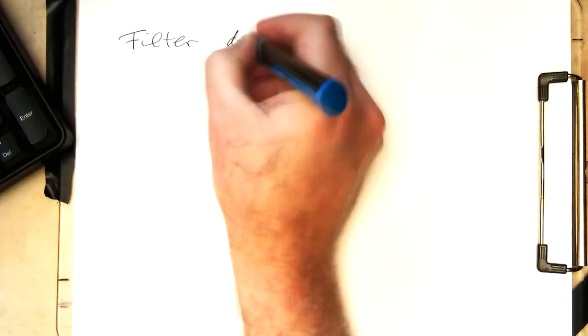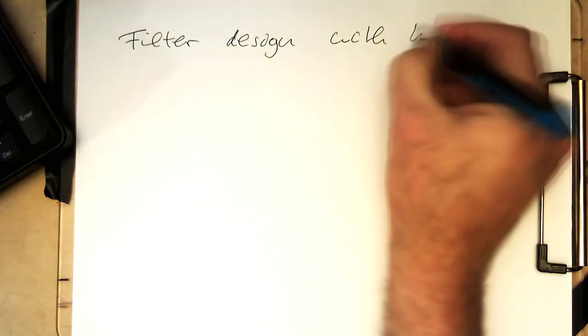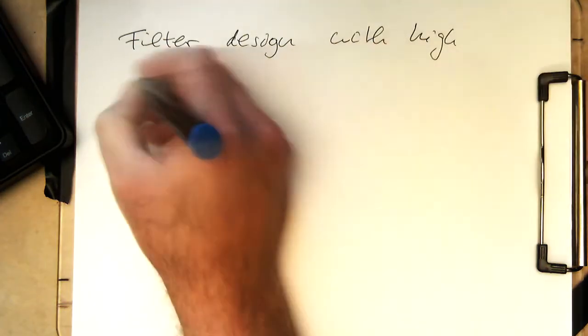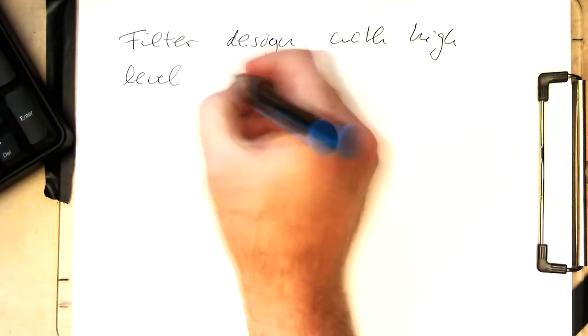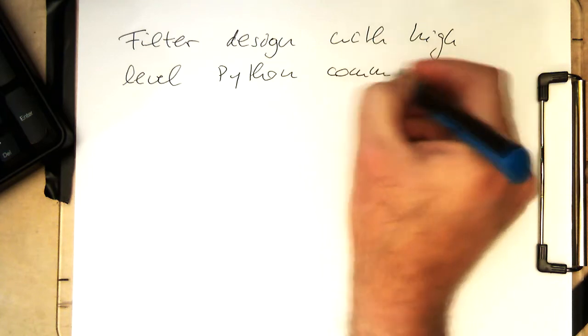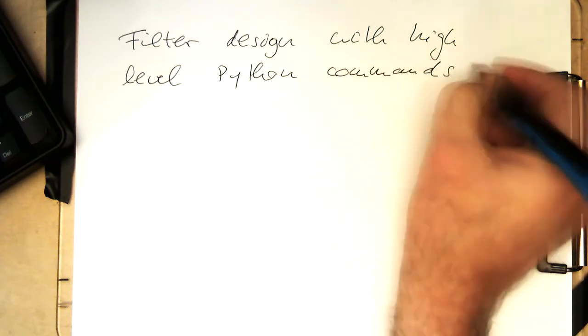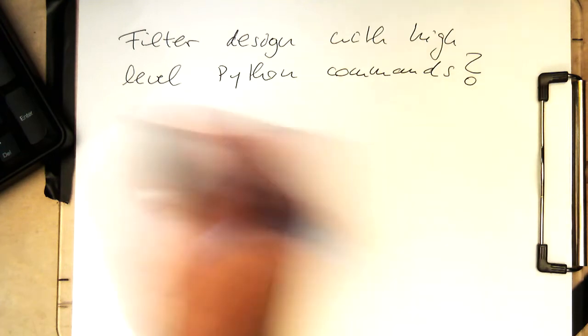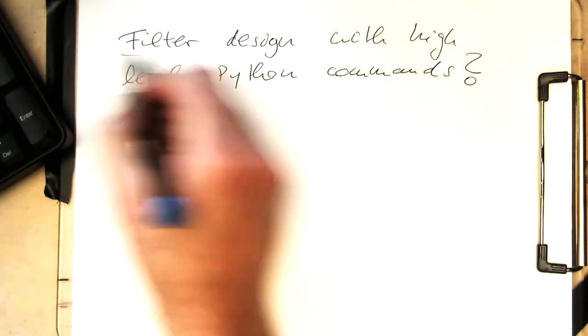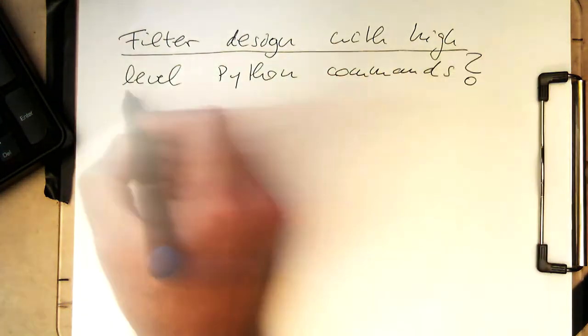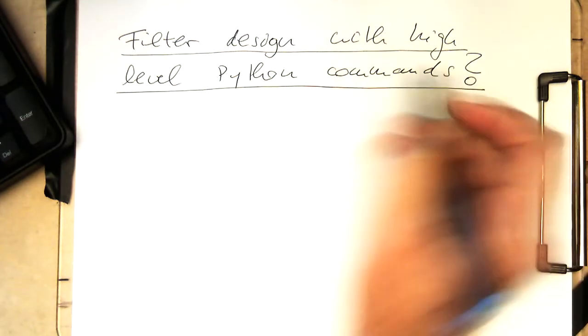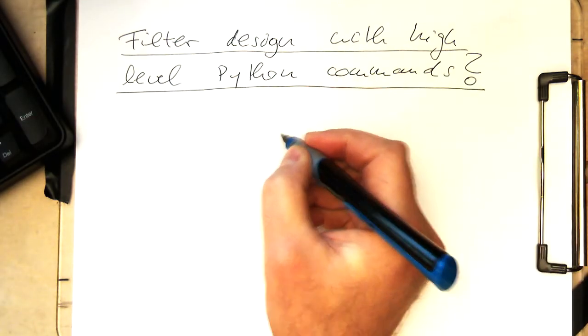How do we do filter design with high-level Python commands? Obviously, we want to avoid calculating bilinear transforms or something like this and getting directly to work.